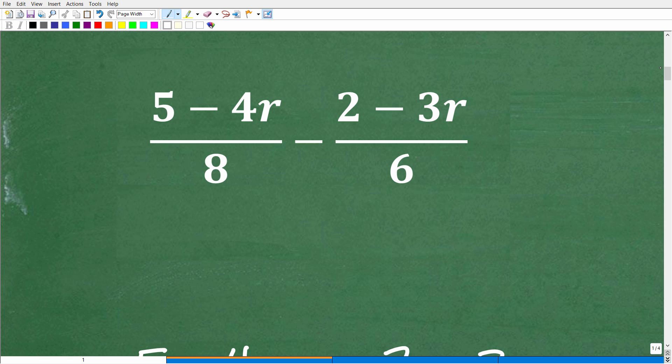Okay, so here is our problem: 5 minus 4r over 8 minus 2 minus 3r over 6. Now, obviously, we are dealing with rational expressions. Effectively, a fraction with a numerator or denominator as a polynomial is something we call a rational expression in algebra. But effectively, we are dealing with fractions. So if you can't do this problem, 3 over 8 minus 1 over 6, well, you're going to have a tough time with this problem right here. So if you're studying algebra and you're still weak with fractions,